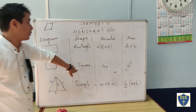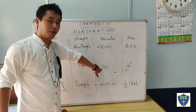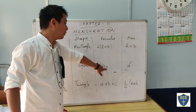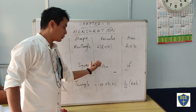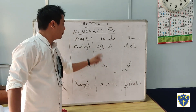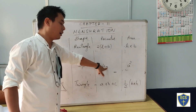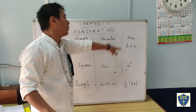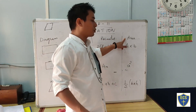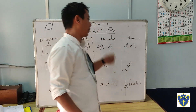Next is square. The perimeter of a square is equal to 4a, where 'a' means the side of the square. The area of a square is equal to a squared — that is side times side.